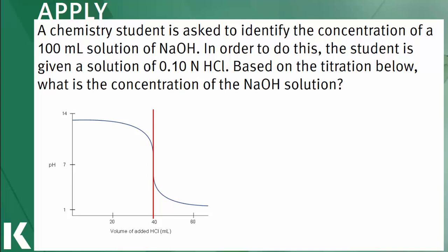The equation that relates to normality and volume of acid or base at the equivalence point is normality of acid multiplied by volume of acid equals normality of base multiplied by volume of base. This equation is covered in an earlier video. Rearrange the equation to solve for the unknown, which is the normality of base.